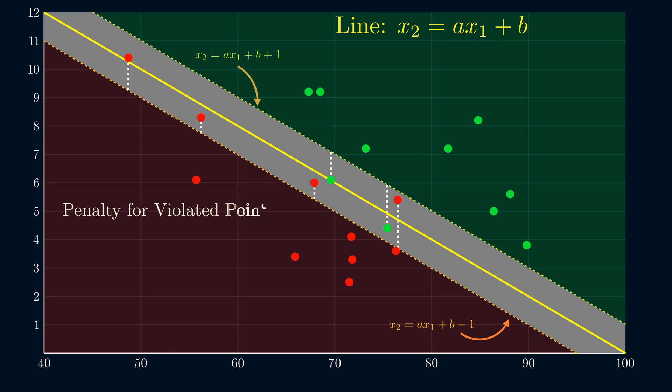For a violated red point, the penalty is the distance to the bottom line of the buffer. And for a green point, the penalty is the distance to the top line of the buffer. Of course, if a point is already in the right region, there won't be any penalty.